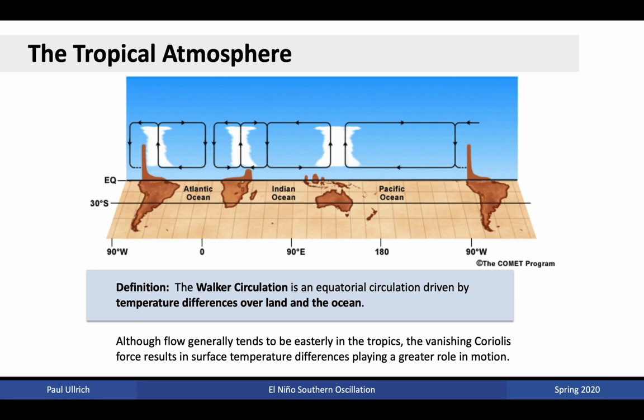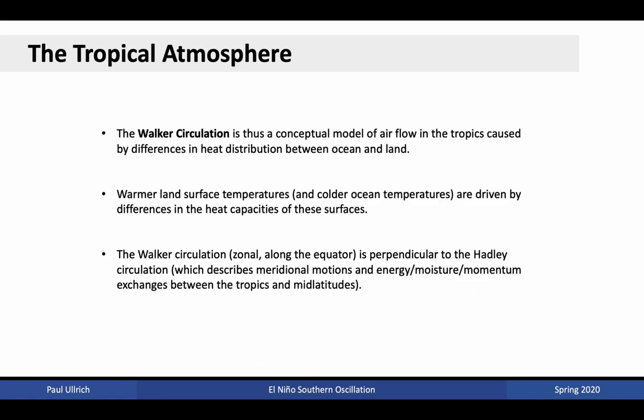These surface temperature differences end up playing a much greater role in determining the direction of motion. The Walker circulation is a conceptual model of air flow in the tropics caused by differences in heat distribution between ocean and land, and it's the dominant description of zonal circulation along the equator. Warmer land surface temperatures and colder ocean temperatures are driven by differences in the heat capacities of these two surfaces. The Walker circulation, which is zonal along the equator, is perpendicular to the Hadley circulation, which describes meridional motions and energy-moisture-momentum exchanges between the tropics and mid-latitudes.